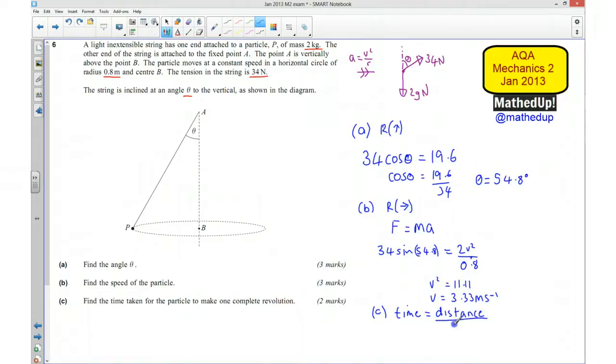The distance in one complete revolution is 2πr, the circumference of the circle, which is 2 times π times the radius, divided by the speed of 3.33 meters per second.